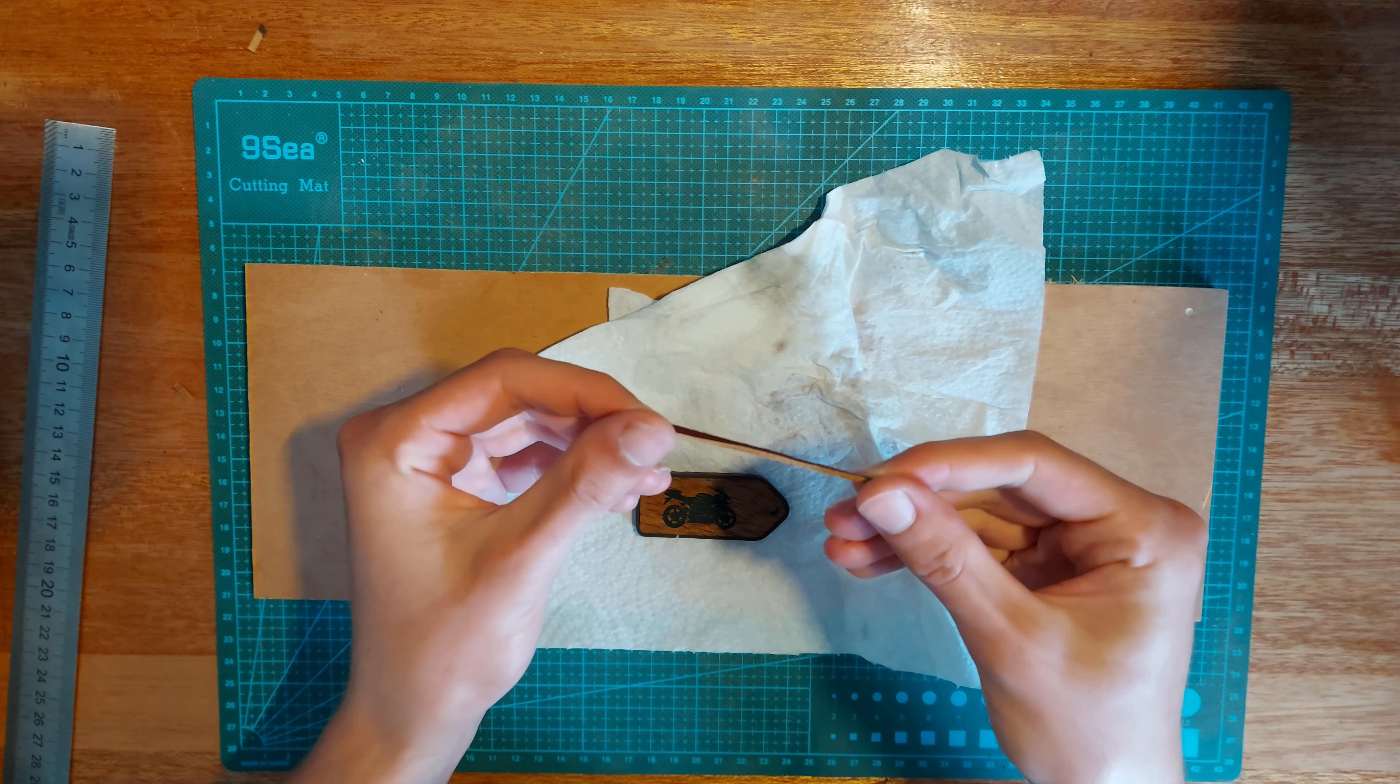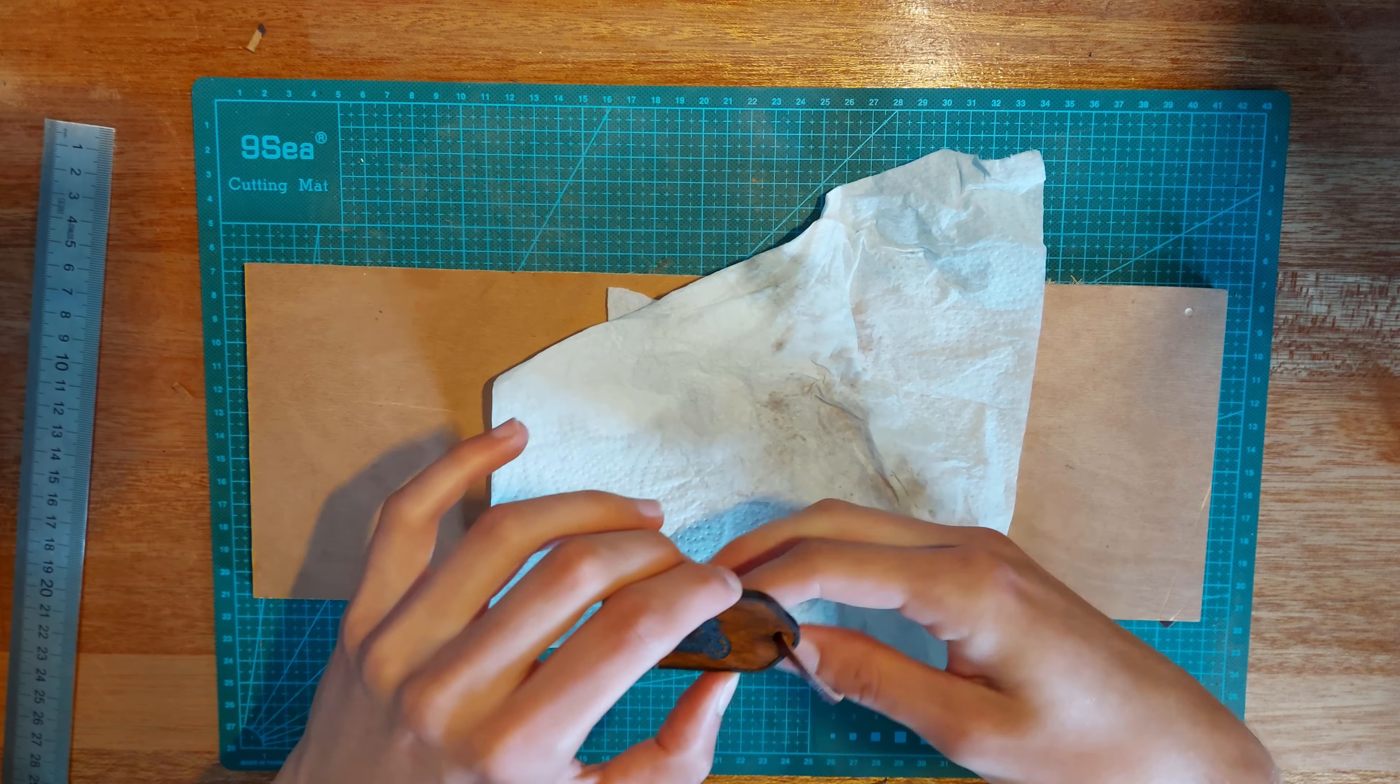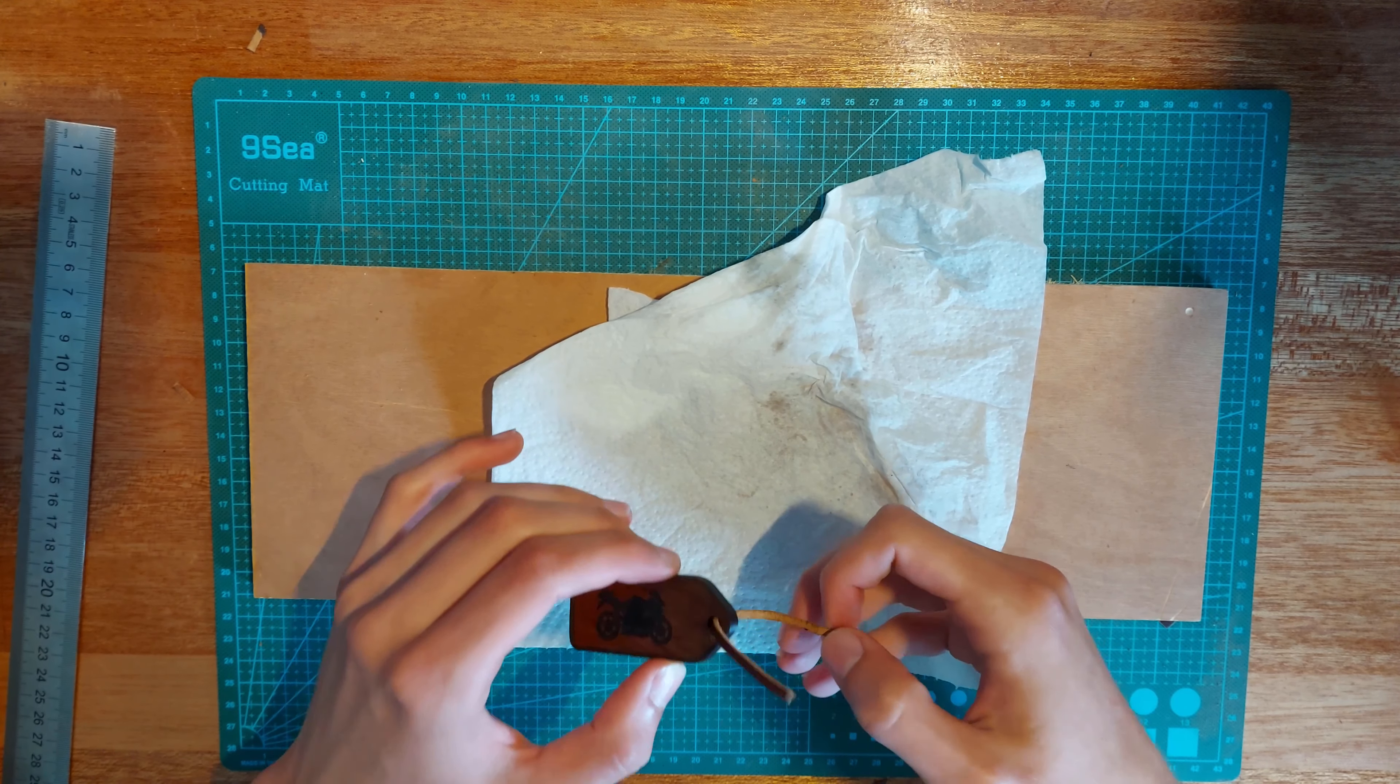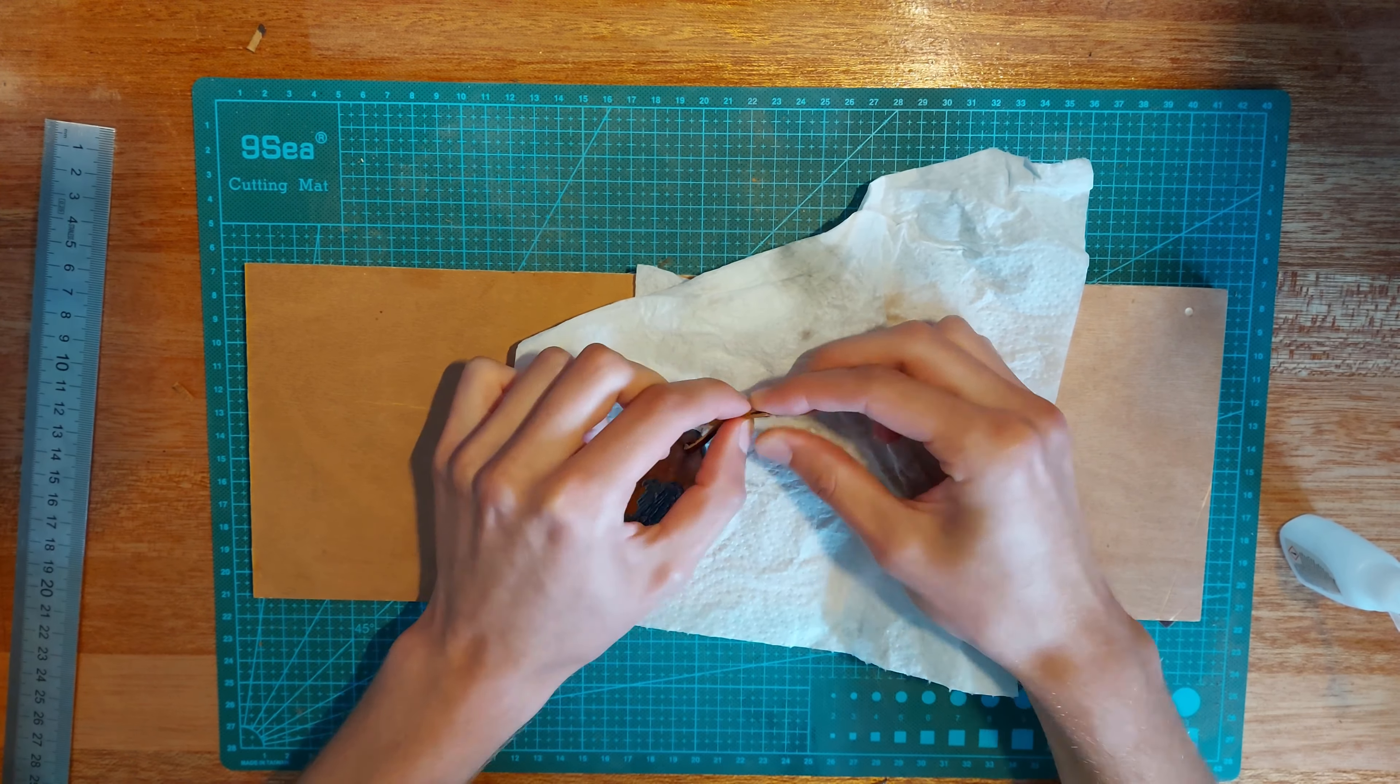The keychain also needed a little loop to attach it to the keys. I used a small piece of leather for that. I glued the loop shut and stuffed the ugly glue seam into the hole.